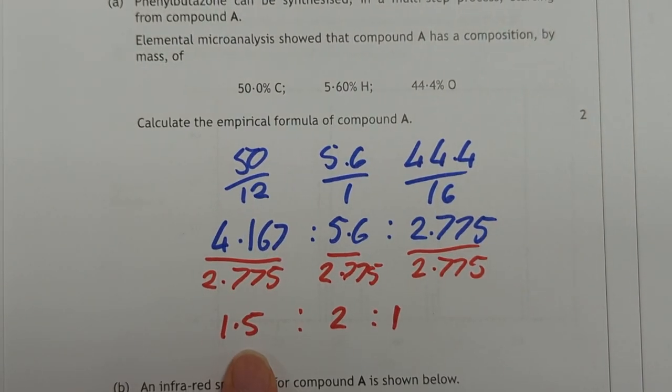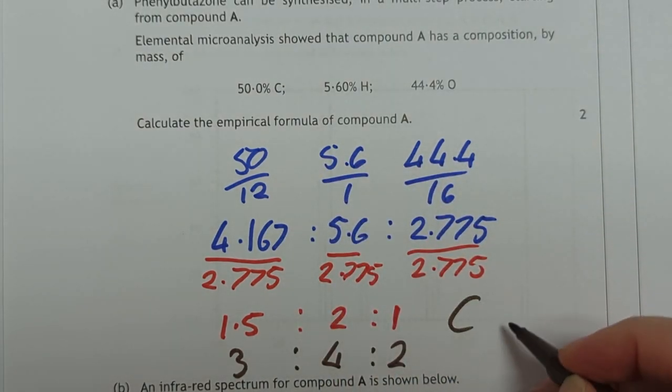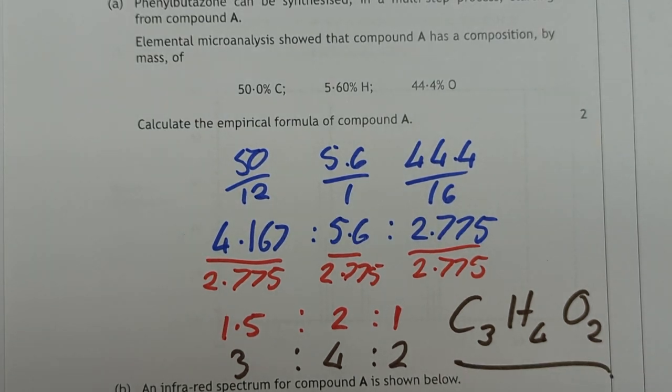Quite nice, this one, because it turns out this also demonstrates another concept I was talking about. We end up with... Put it on the screen here. That's better. We end up with 1.5 to 2 to 1, which, of course, you can't have. So let's multiply this up to be 3 to 4 to 2. So the empirical formula would be C3H4O2. Excellent.